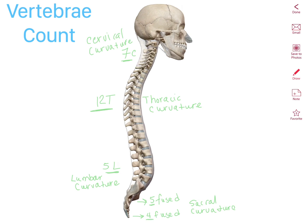To remember these numbers, I tell my students: at 7 a.m. you have breakfast — 7 cervical vertebrae; at 12 p.m. you have lunch — 12 thoracic vertebrae; and at 5 p.m. you have dinner — 5 lumbar. That 5 p.m. can also represent the 5 fused vertebrae on the sacrum, or if you prefer an early dinner at 4 p.m., that gives you the 4 fused vertebrae on the coccyx.